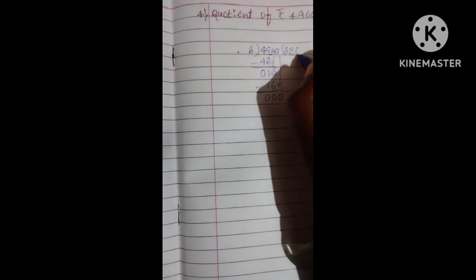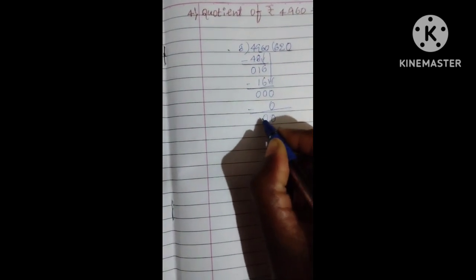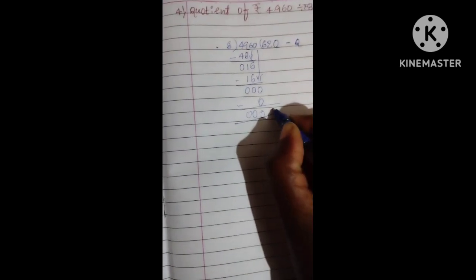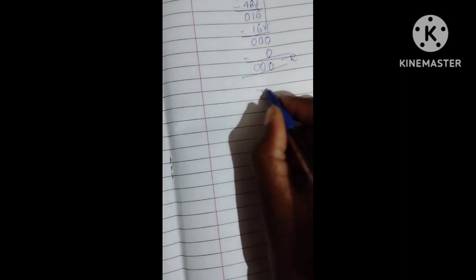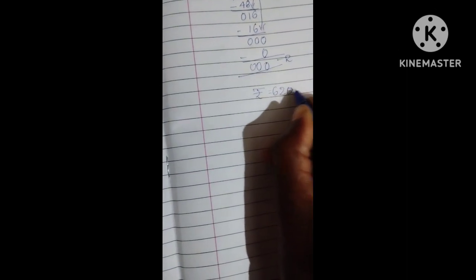Now, 8, 0 is 0. Do the minus. 0, 0, 0. So, what is the answer? This is quotient. This is reminder. Answer is Rupees 620.